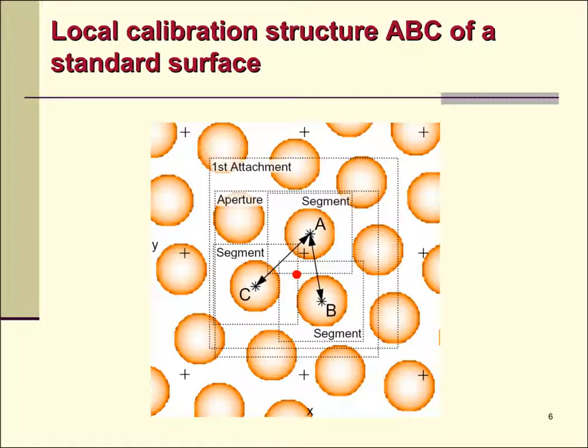Scanning a small neighborhood called an aperture around the captured feature, followed by recognition of topography in the obtained scan, enables detecting the local calibration structure.